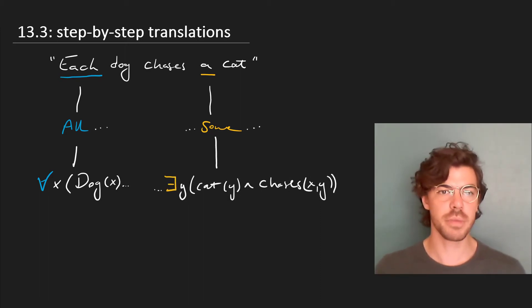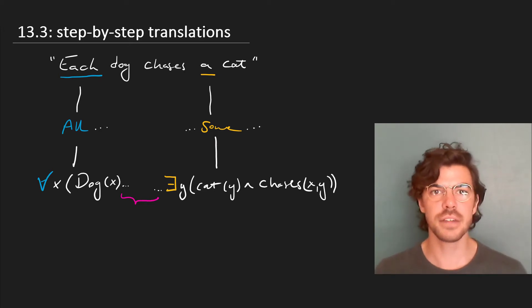Now the only question that remains is how we should link these together—that is to say, what main connective we should drop in here where these ellipses are. And the answer, as we saw in an earlier video, is that universal statements, of which this is one, have a conditional sign as their main connective on the inside.